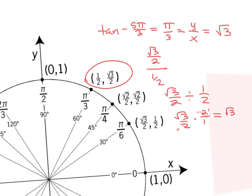So if your angle is not on the unit circle, you get it to an angle that is on the unit circle by adding and subtracting. If it's in degrees, you add and subtract 360. If it's in radians, you add and subtract 2 pi.